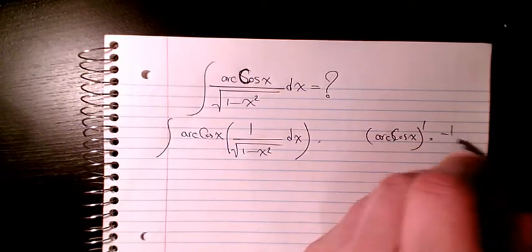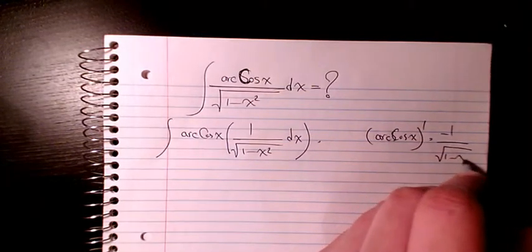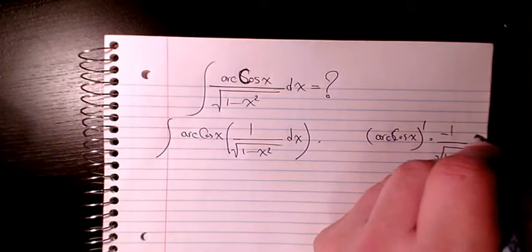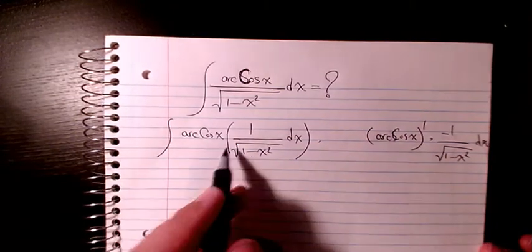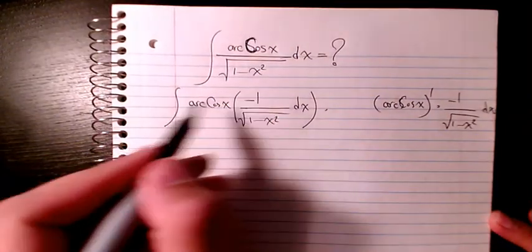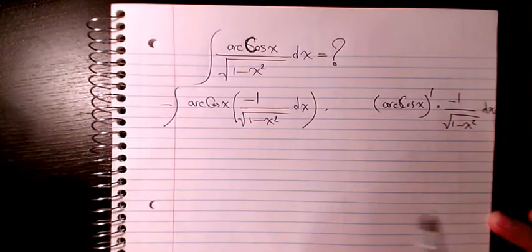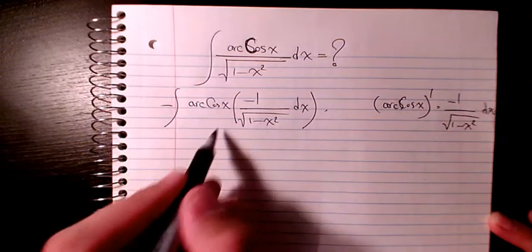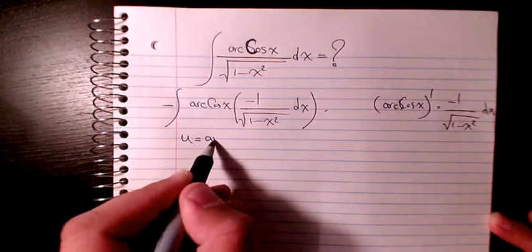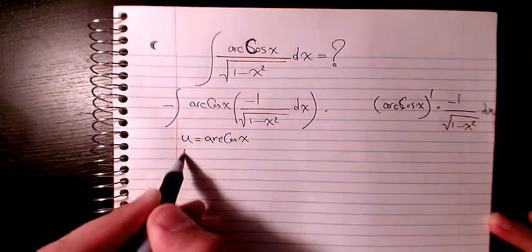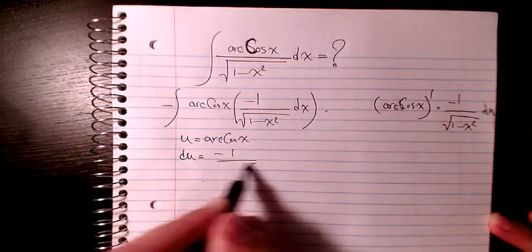negative 1 over square root of 1 minus x squared. So as you see here, if I multiply by two negatives, I can consider u as arccos x, so du will be negative 1 over square root of 1 minus x squared dx.